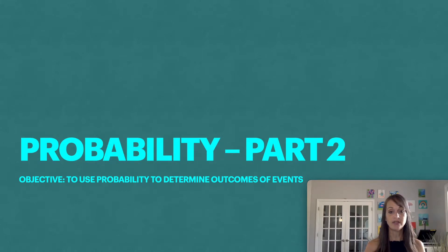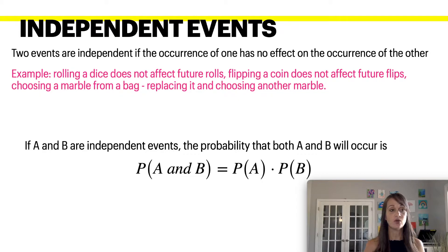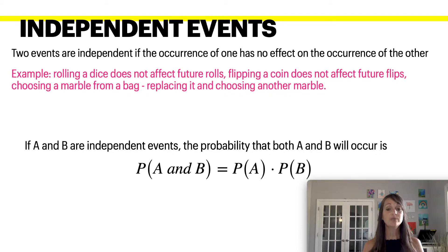This is part two of a series on probability and how to use probability to determine outcomes of events. You have independent events, where an event happens such that the first occurrence has no effect on the second occurrence. For example, if you roll a dice and then roll a dice again, the first dice has no effect on the second. Same thing with flipping a coin, or choosing a marble from a bag, putting it back, and picking another — you didn't change the occurrence of the event. Anytime that happens, all you have to do is multiply the two probabilities together.